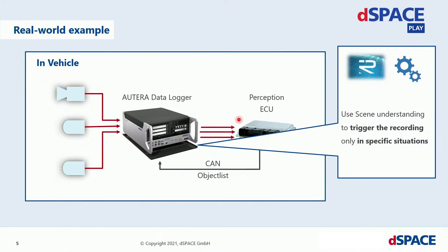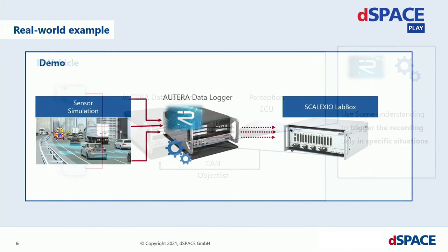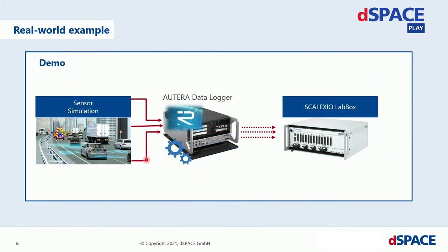We can then implement a smart logging algorithm on the Autera to use the scene understanding from the perception ECU to only trigger the recording in specific situations. Since we're dSPACE, it's way easier for me to drive around virtually using our sensor simulation software. To substitute for the perception ECU I'm using a Scalaxio lab box which feeds back the CAN object list into the Autera.